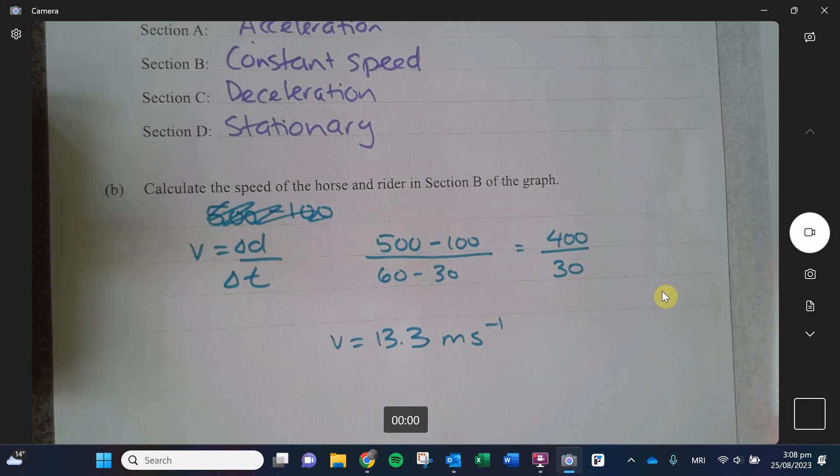So if I did 400 divided by 30, I would get my velocity is equal to about 13.3 meters per second. It's important to write down your units, because the units can make a difference between the merit and the excellence. It's a really ridiculous decision. But excellence level students don't forget their units.